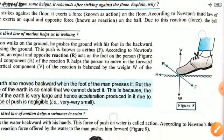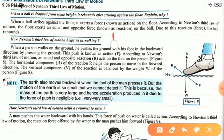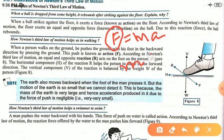Similarly, when we press the ground, the earth also moves, but we are not able to observe that motion. This is because, from F = ma, when force is constant, mass is inversely proportional to acceleration. The earth's mass is extremely large, so the acceleration produced is so small that we cannot observe it.